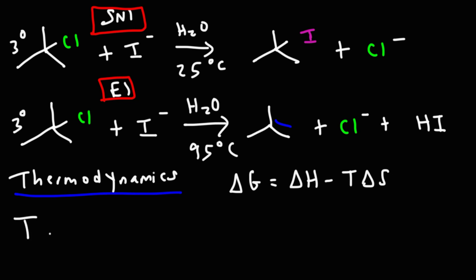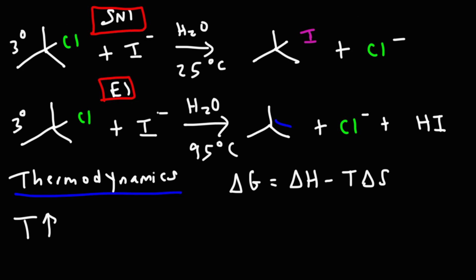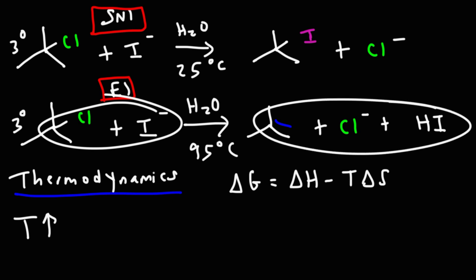An increase in temperature enhances the entropy effect. If we look at the SN1 and E1 reactions: notice that for the SN1 reaction, we have two reactants and two products — so in terms of the number of molecules and ions, there's no net change; it's two for two. But for the E1 reaction, we have two reactants and three products, so there's an increase in entropy for the E1 reaction.